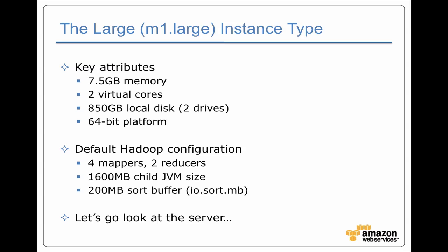The M1 large instance type is one of the most common types people use for Hadoop clusters. It's got 7.5 gigs of memory with two virtual cores, and it's a 64-bit platform. The default Hadoop configuration is to have four mappers and two reducers running in parallel, each with 1.6 gigabytes of memory for the JVM. Since 6 times 1.6 is more than 7.5 gigabytes, if your jobs actually use all the memory in their Map and Reduce tasks, you'll want to use the high memory bootstrap action to change the configuration so you don't run out of memory.